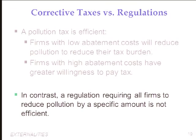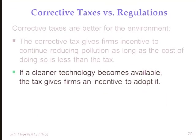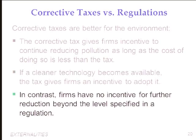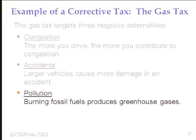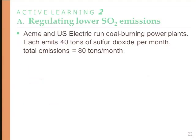There are three obvious negative externalities from gasoline use in vehicles: one, congestion — the more you drive, the more you contribute; two, accidents — larger vehicles cause more damage; three, pollution — burning more fossil fuels produces more greenhouse gases. If those external costs can be monetized and quantified, you can impose a gas tax. Now let's look at a specific example illustrating the trade-off between abatement and paying a tax on sulfur dioxide generated by two electrical utility companies both burning coal. Each emits 40 tons of sulfur dioxide per month, totaling 80 tons. The government's goal is to reduce emissions by 25 percent, to 60 tons per month.